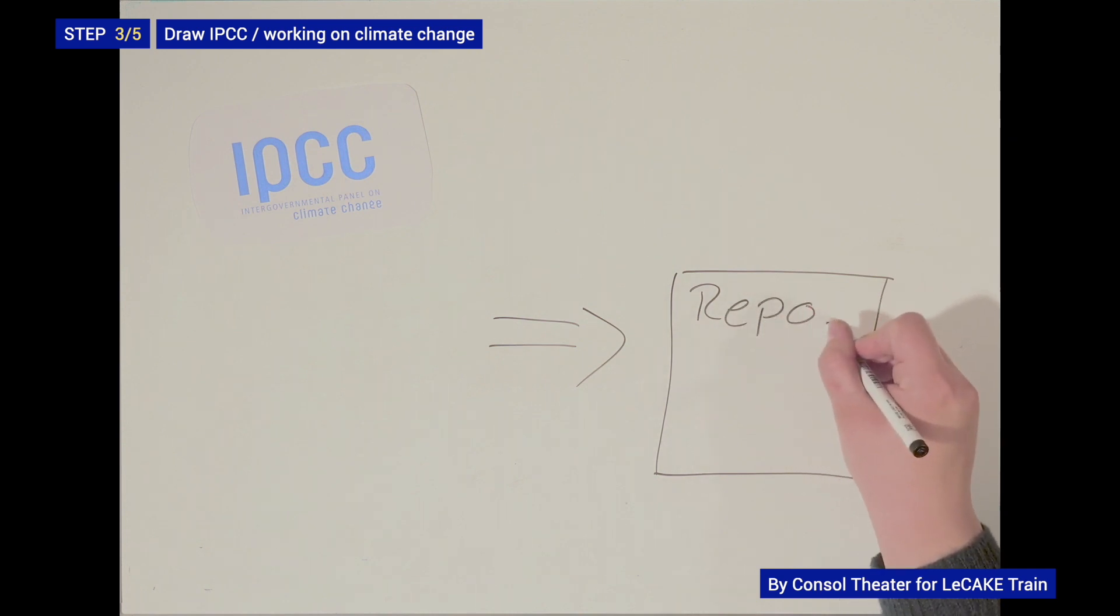Furthermore, climate change is a global and constantly changing process, which means that new information can be gathered in a rapid time. Let's take a closer look at the reports, as they are the most important part of the IPCC's work.